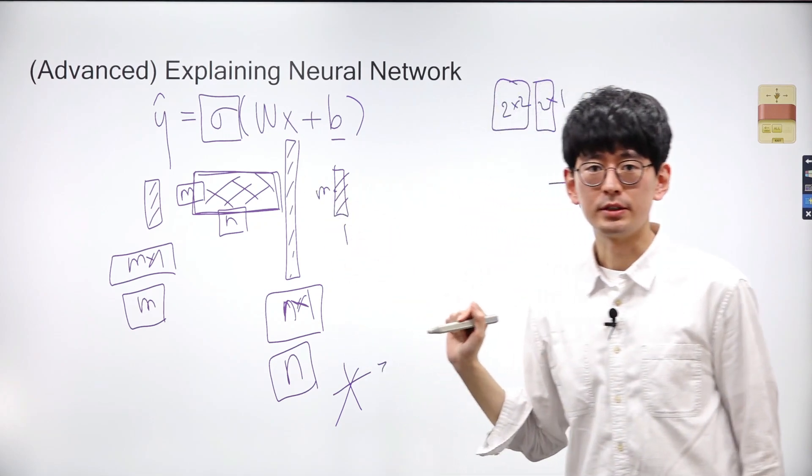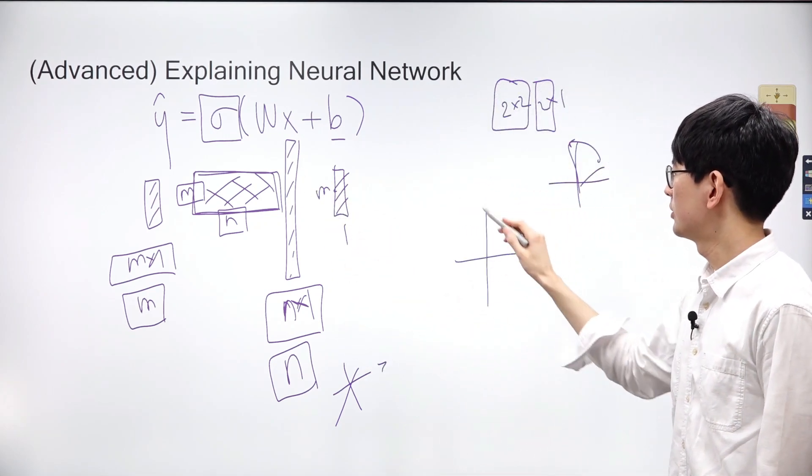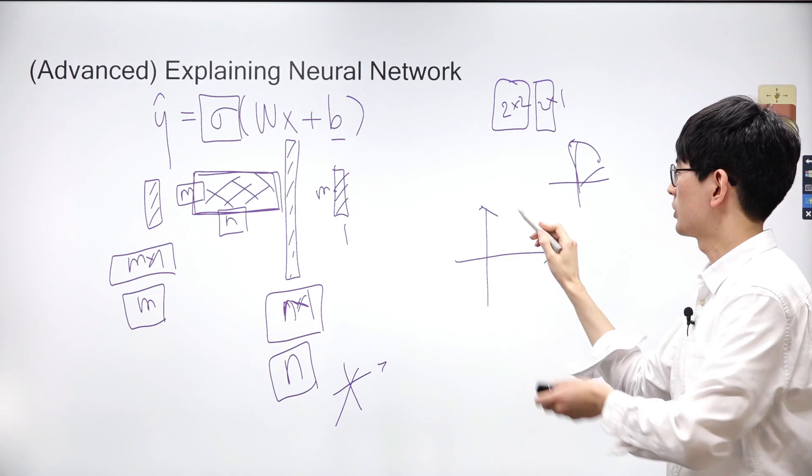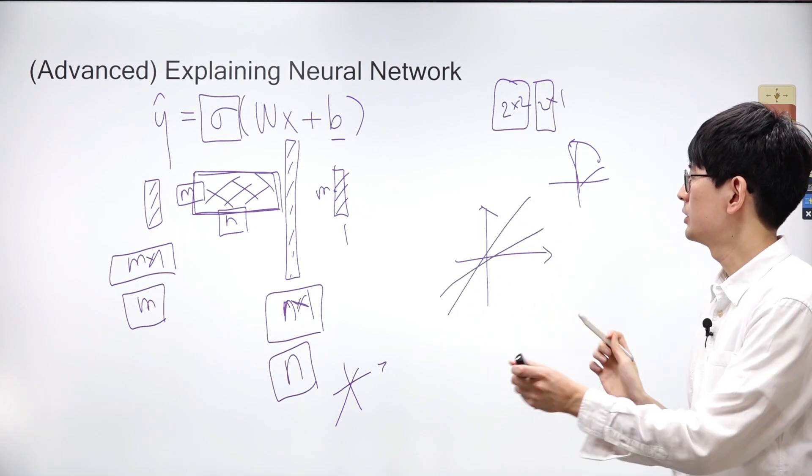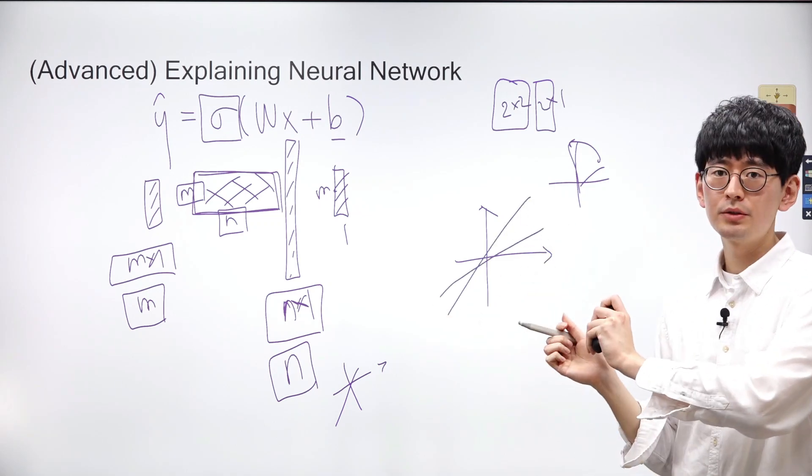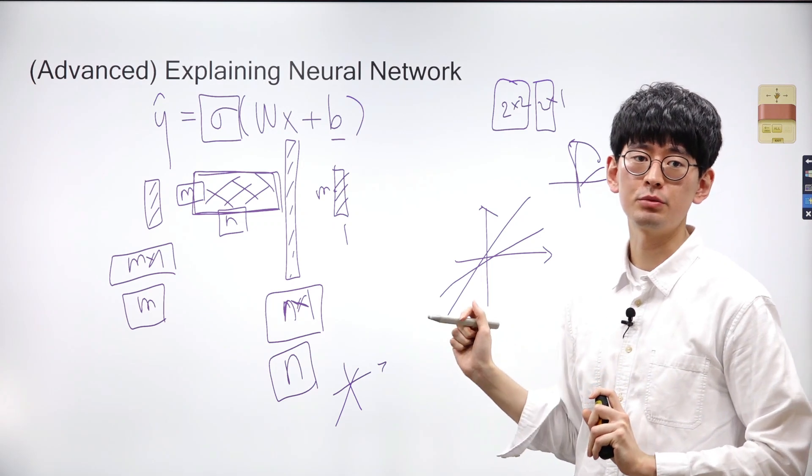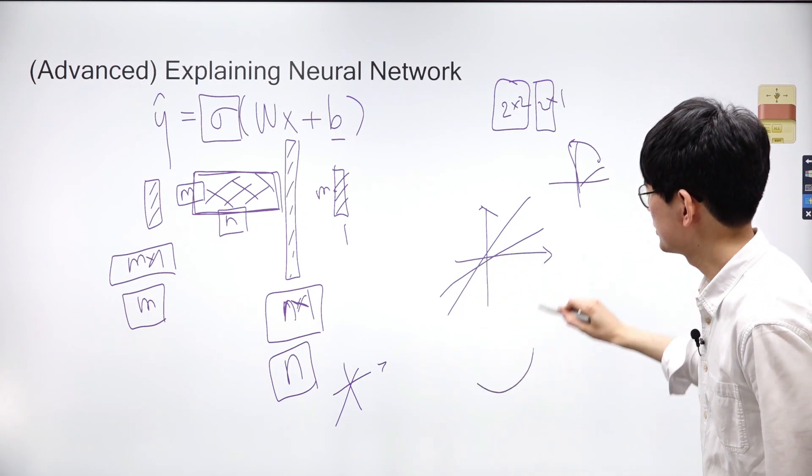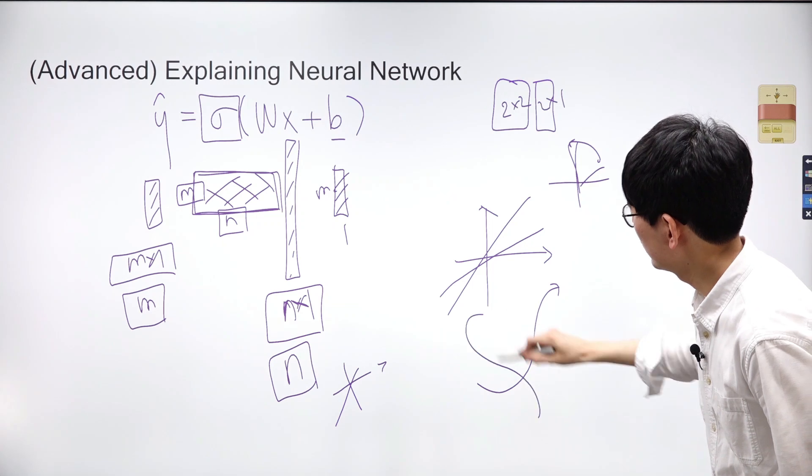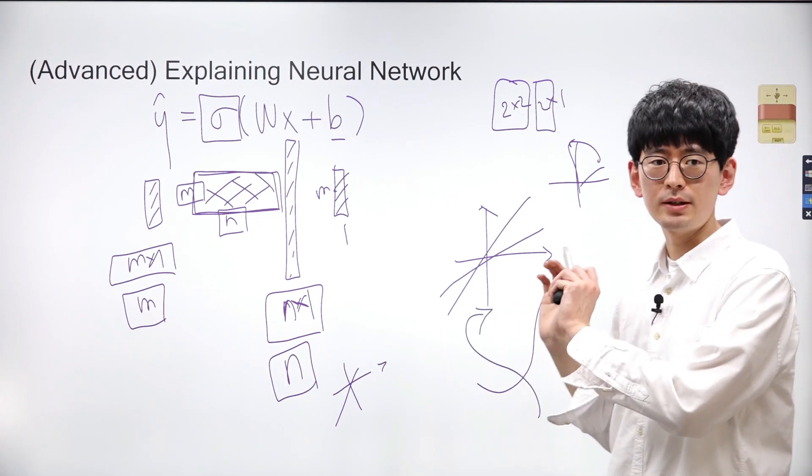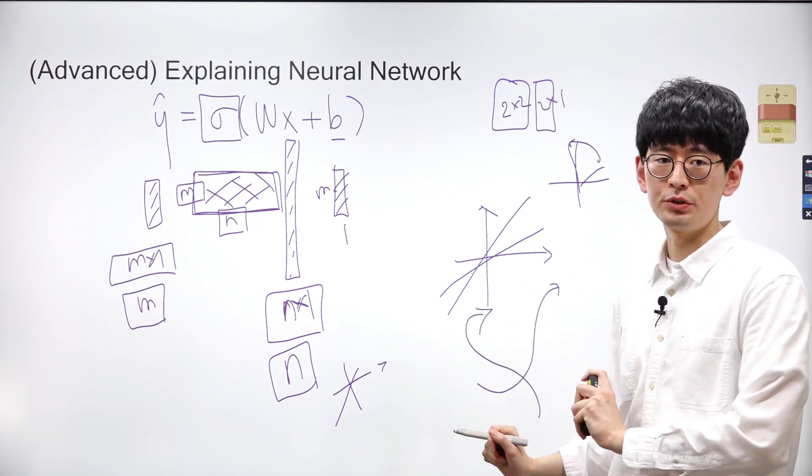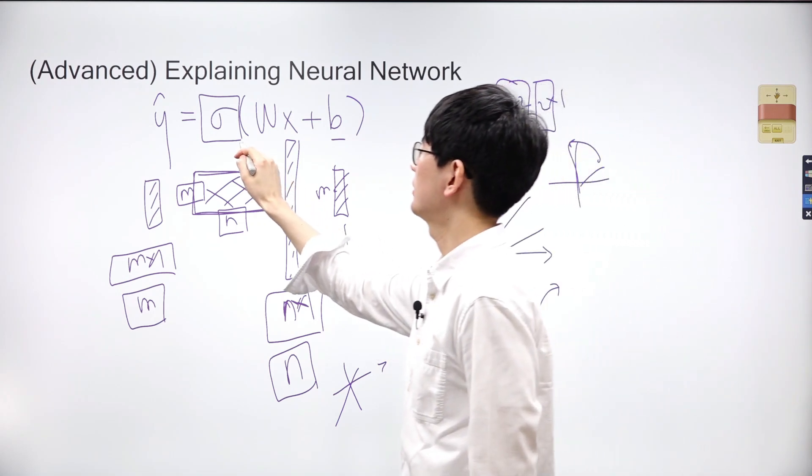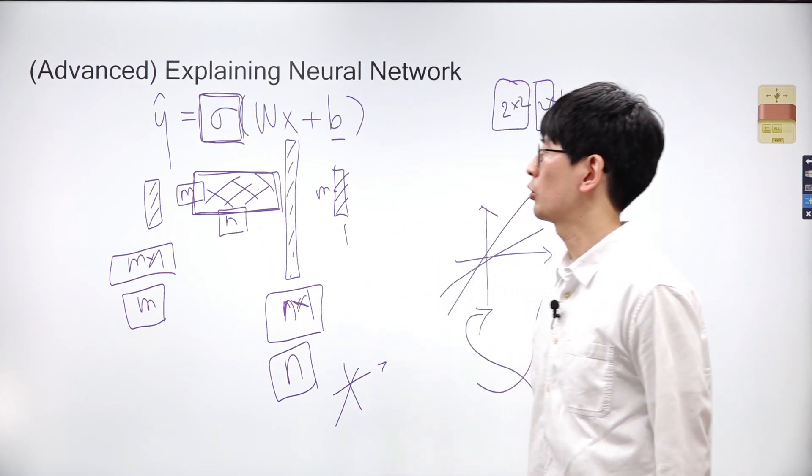Now let's discuss why we need an activation function in neural networks. Transforming a coordinate space, such as rotating and resizing, are all linear transformations. However, sometimes we need to introduce curvature or remove linearity from the axis in the space to extract meaningful information from the data. That's why we apply an activation function to the product of weights and data.